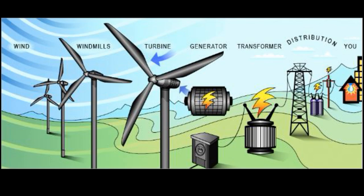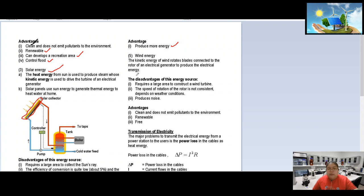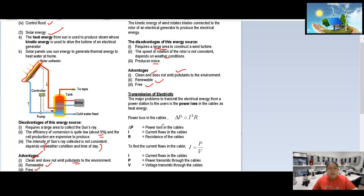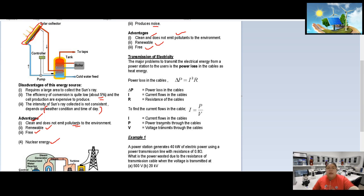Disadvantages of wind energy: requires a large area; the speed of rotation is not consistent — depends on weather; and it produces noise. Advantages: clean, does not pollute, renewable, and wind is free. Non-renewable sources normally involve burning; renewable sources are those we get naturally.